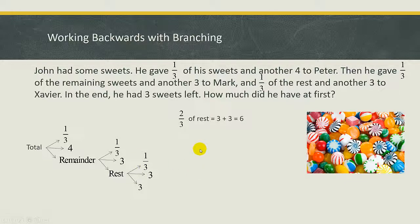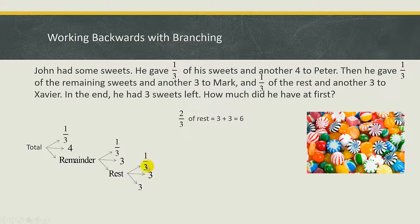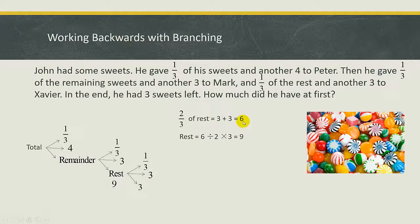Let's work backwards. Since one-third of the rest was given to Xavier, the remaining three sweets plus three given to Xavier must equal two-thirds of the rest — because one minus one-third gives two-thirds. So two-thirds of the rest equals three plus three, which is six. To find the rest, take six divided by two times three, which gives us nine. So nine sweets represent the rest.